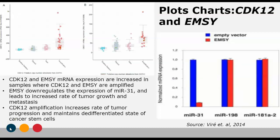Here are the plot charts for CDK12 and MZ, which both show that mRNA expression was significantly increased when these genes were amplified in the samples. This is significant as both genes are regulators of other genes and transcription factors. Specifically, MZ down-regulates the expression of microRNA-31, which is an anti-metastatic microRNA. Down-regulation of this microRNA leads to an increased rate of tumor growth and metastasis. CDK12 amplification increases the rate of tumor progression, maintains the differentiated state of cancer stem cells, and changes the expression of DNA damage repair genes.